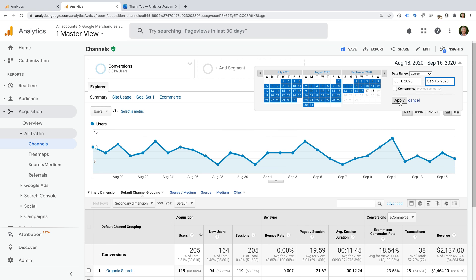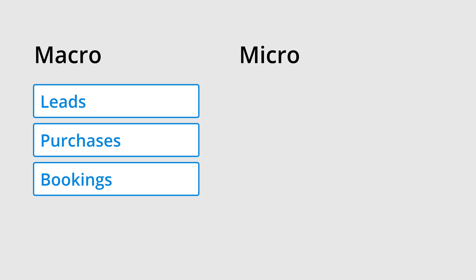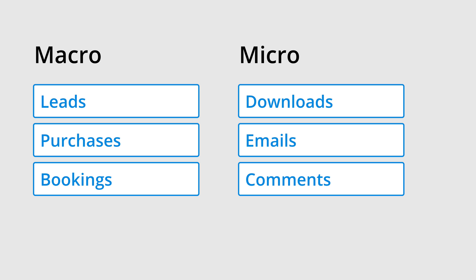Before we wrap up, I want to mention that it's important to take some time to think about the different actions you want people to take on your website. You can then classify these actions as macro and micro conversions. Think of macro conversions as your primary objectives — the actions that drive the most value for you and your organisation. For example, leads, purchases, members, and bookings could be examples of macro conversions. Then you can think of micro conversions as secondary objectives — actions that show a high level of engagement but don't provide the same value. Examples of micro conversions could include people downloading a PDF, subscribing to your email updates, commenting, or logging into a members area. Once you've categorized actions as micro and macro conversions, you can then configure them as goals in Google Analytics.